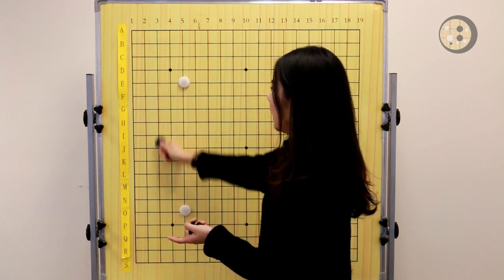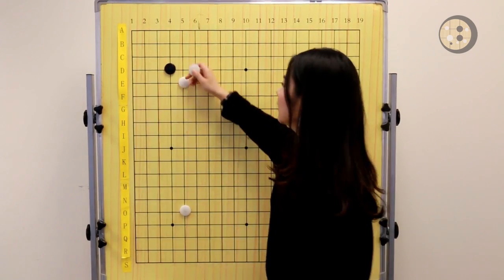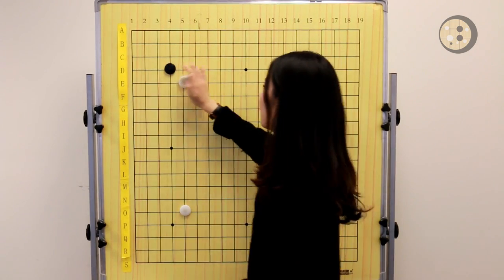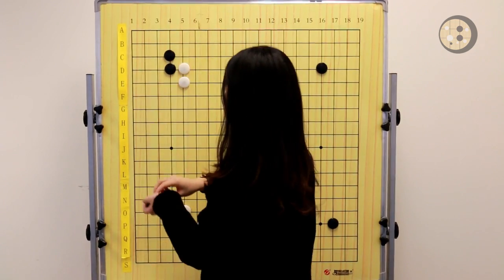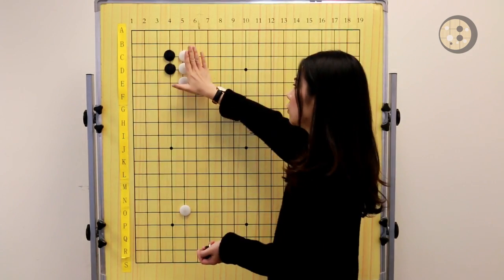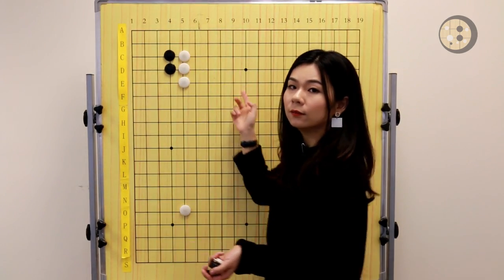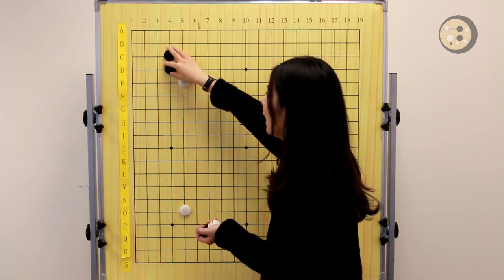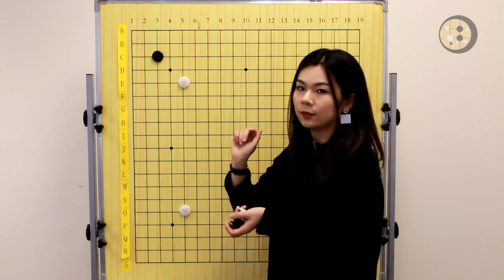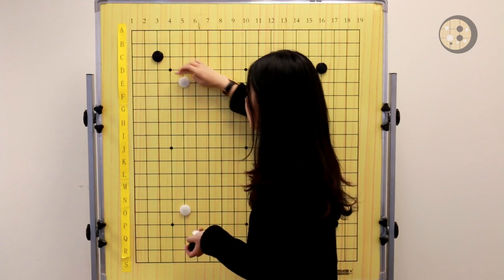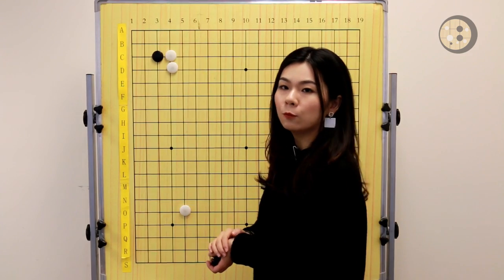In the actual game, black made a mistake by playing the star point. My student thought there's nothing wrong with taking the star point. But after this move, it's white's turn, and white can simply block, and block again. Now the two black stones are too close to the three white stones on the outside, and the liberties are very tight. Black actually has a better way to approach the corner, which is simply taking the 3-3 point. After taking the 3-3 point, it's a little further from the 5-5 point, and you won't give white a strong wall on the outside.